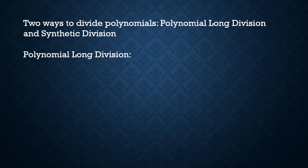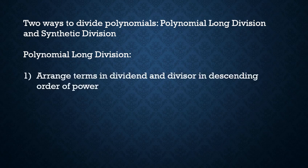This is the set of steps you go through to do polynomial long division. It's going to make a lot more sense when we see the process on an actual sample problem. First, you're going to arrange the terms in the dividend and the divisor in descending order of power. The dividend is the thing you are dividing — it's in the numerator of your fraction. The divisor is the thing you are dividing by — that's on the bottom of your fraction.